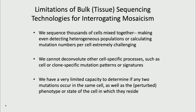With bulk sequencing, we're mixing thousands of cells together, making it extremely challenging to detect rare heterogeneous populations or measure mutation rate per cell. We can't deconvolute cell-specific processes — whether a mutation co-segregates with another mutation, a transcriptional profile, an epigenetic profile, or anything else. And we can't determine what we really want to know: perturbed cell states, which are a combination of changes in the genome, transcriptome, epigenome, and other things being discovered.